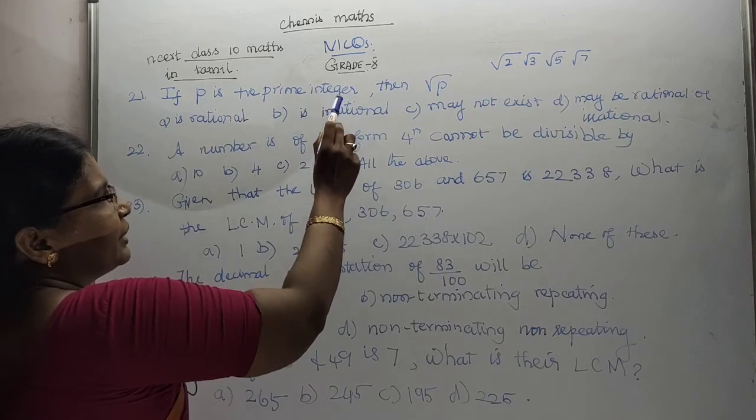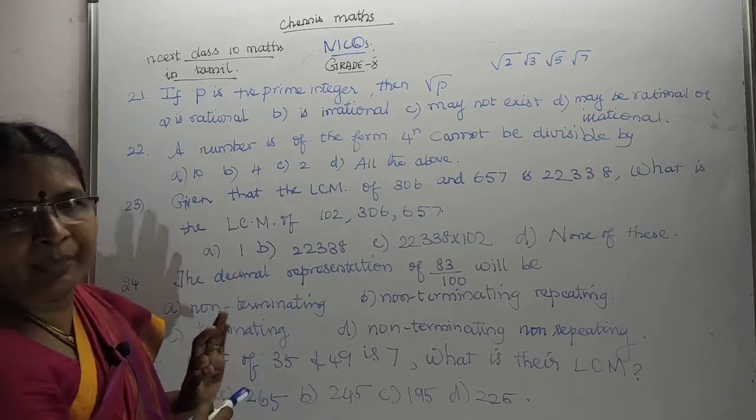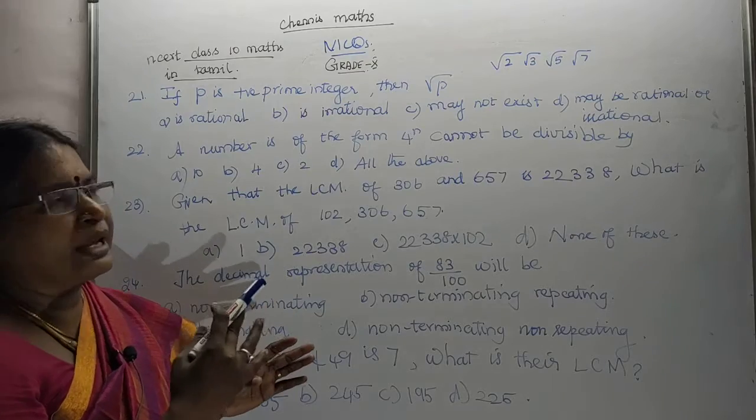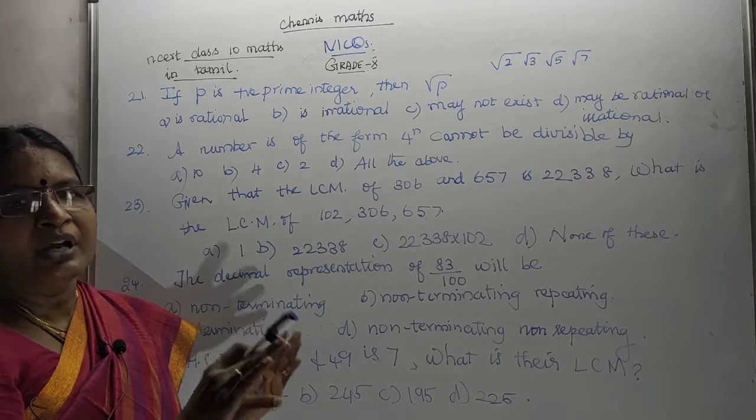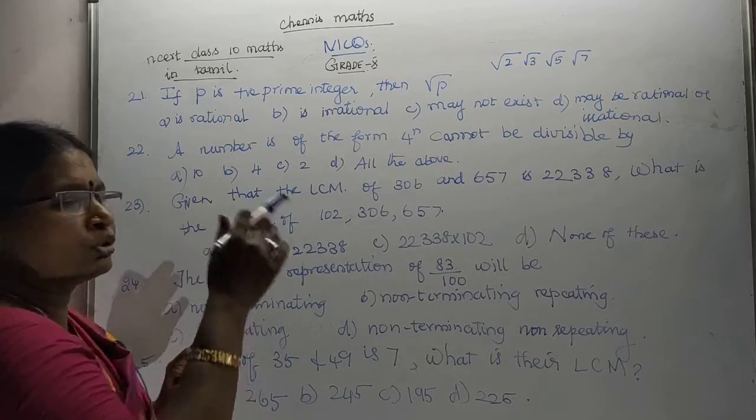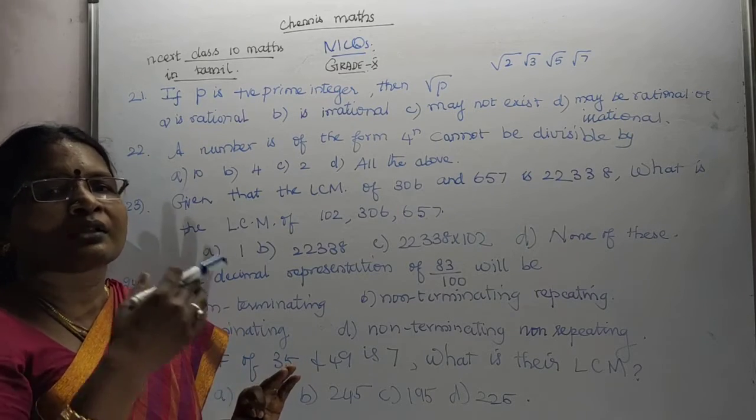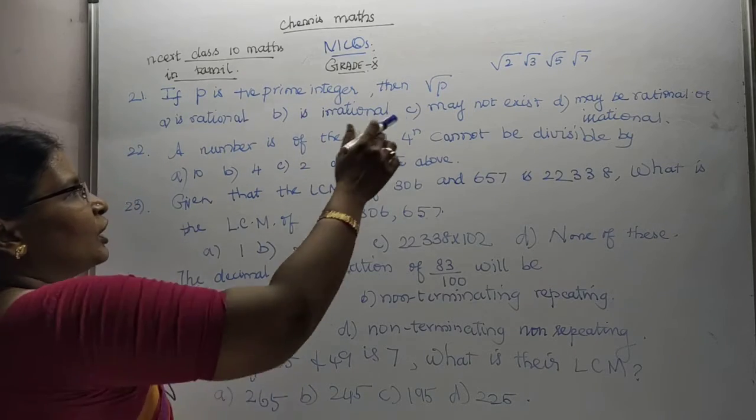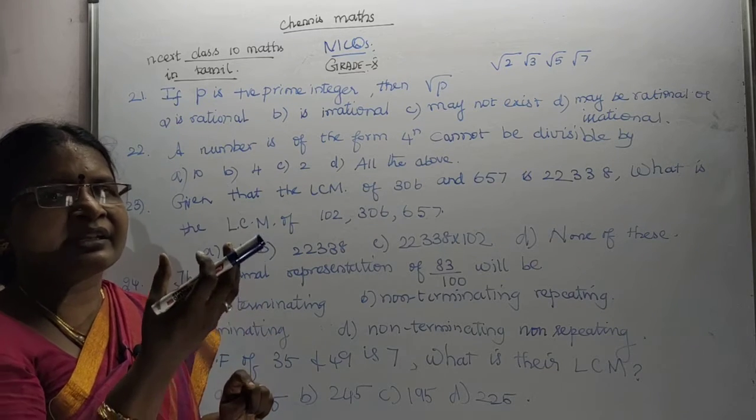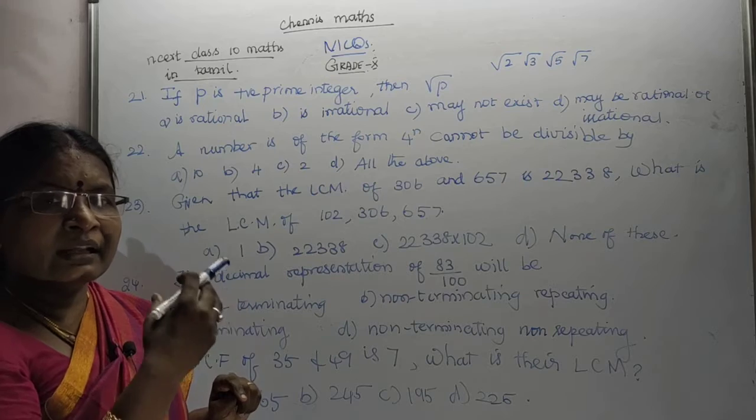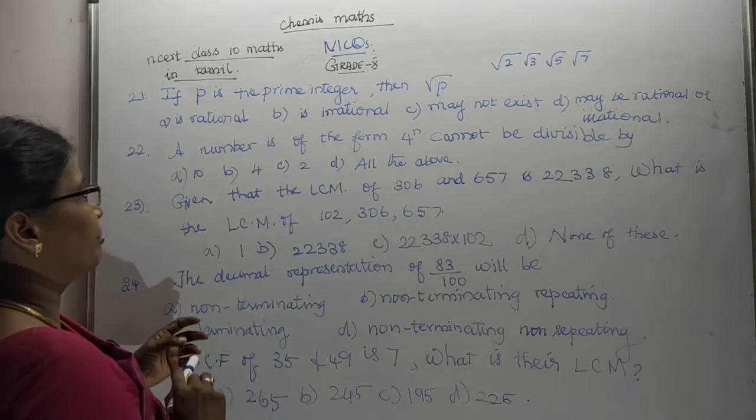If p is positive prime integer, root p is always an irrational number. Maybe rational or irrational is not possible. Every prime number, root 7, root 11, root 13, root 17, root 19, root 23. This means that there is a point. There is a certain recurring decimal expansion. There is recurring digits. That means it is non-recurring. That means it is irrational number.